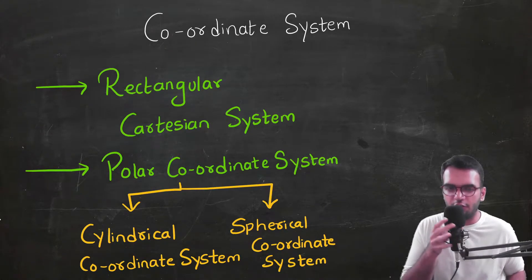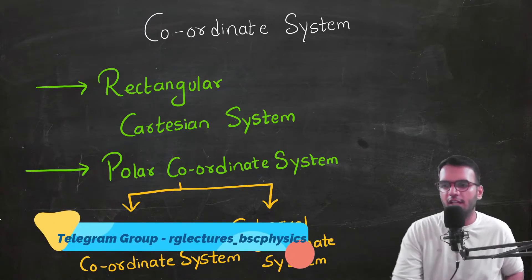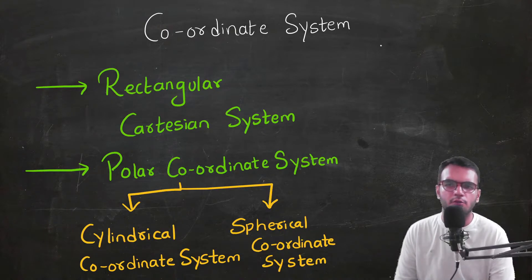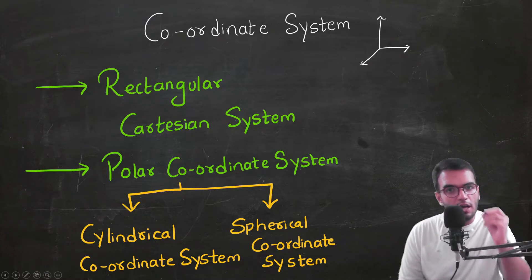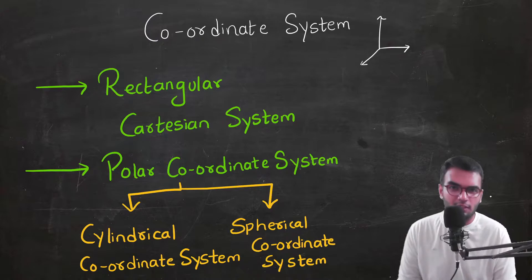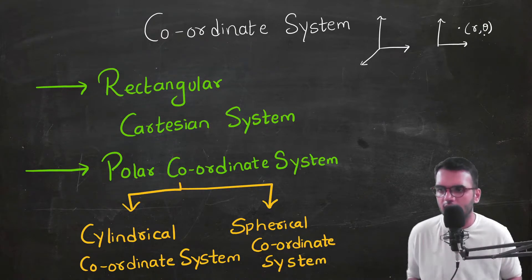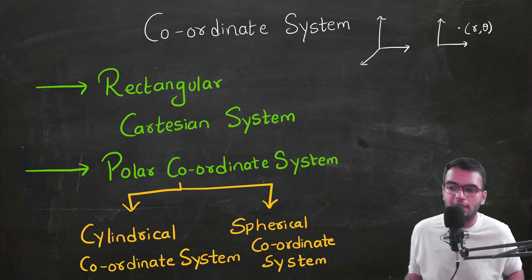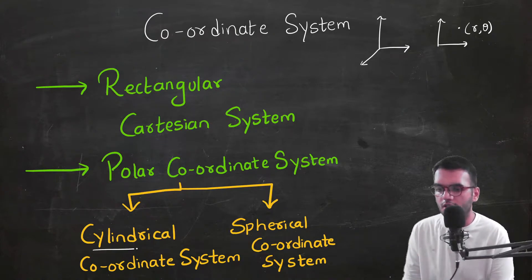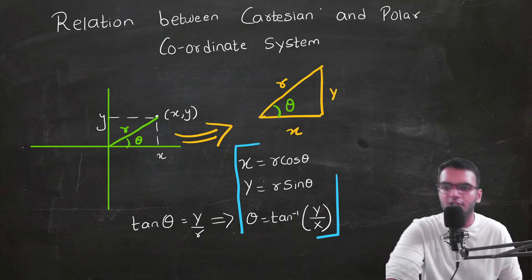Welcome to RG Lectures. In this video we are going to study the concept of coordinate systems. There is the Cartesian coordinate system (x, y, z), the polar coordinate system from mathematics which uses two coordinates r and theta, and if we extend the polar coordinate system to higher physics we get two more: the cylindrical coordinate system and the spherical coordinate system.